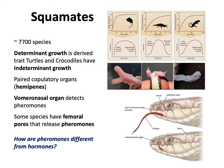While the tuataras — the sphenodonts, the rhynchocephalids — are obscure to most people, the squamates most definitely aren't, in part because there are so many of them: about 7,000 species or so, probably an underestimate, and we're finding new species all the time.